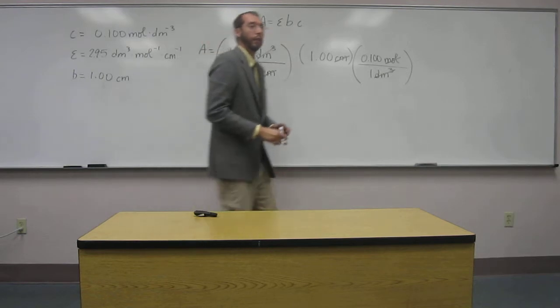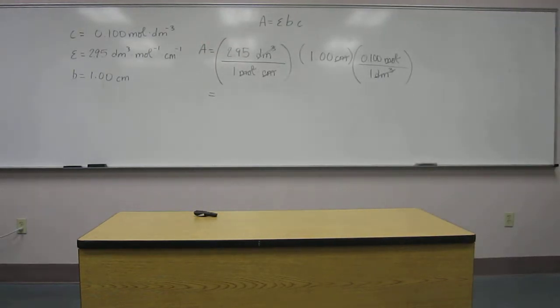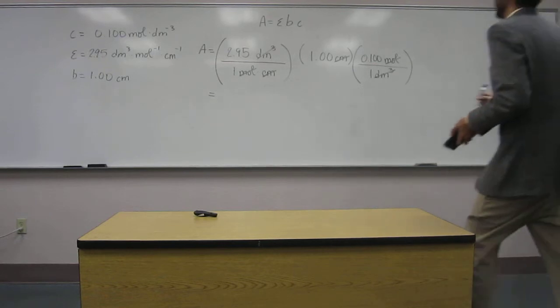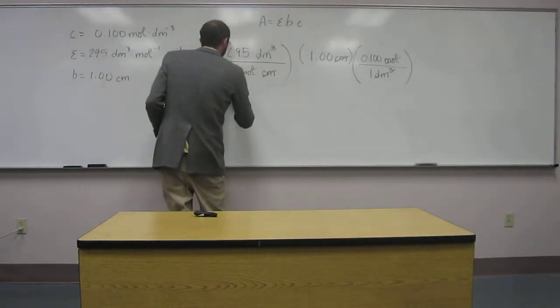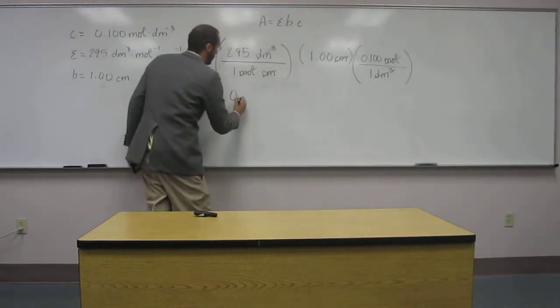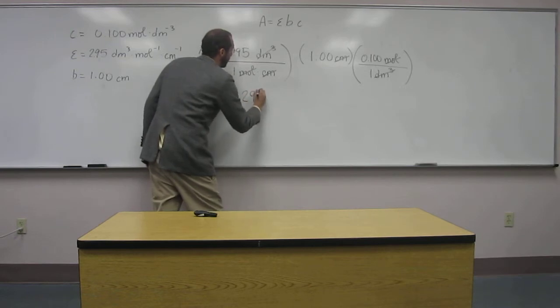So all we have to do now is get our calculator and plug it in. 2.95 times 1 times 0.100. So to three sig figs, 0.295.